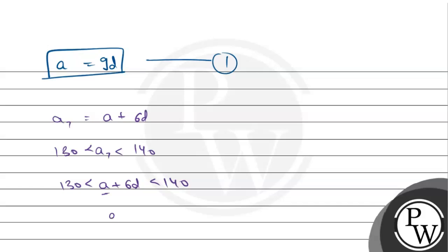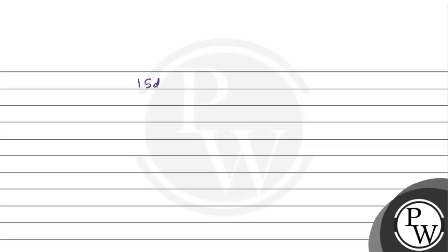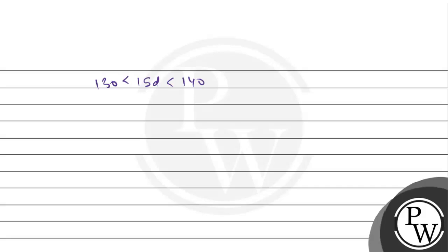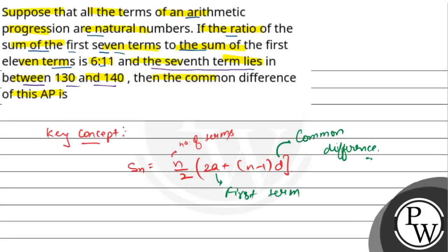अब a = 9d हमारे पास है। तो a + 6d = 9d + 6d = 15d. तो condition हो जाती है: 130 < 15d < 140. और d को natural number होना है।